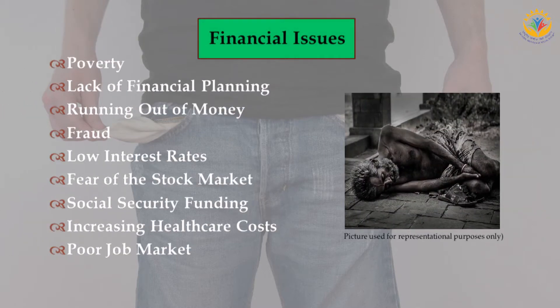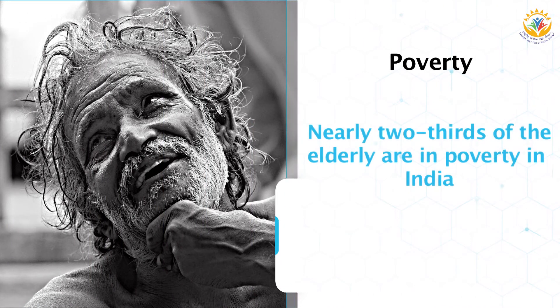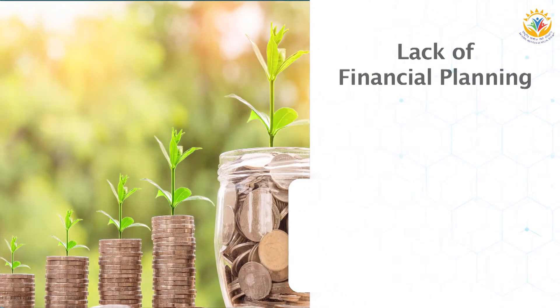Then there are financial issues. First is poverty — nearly two-thirds of the elderly are in poverty in India. Poverty accelerates aging and the problems aged people face. The rate of poverty is slightly higher among elderly women than males. Those who live in poverty have a much harder time managing their basic survival needs and affording medical treatment.